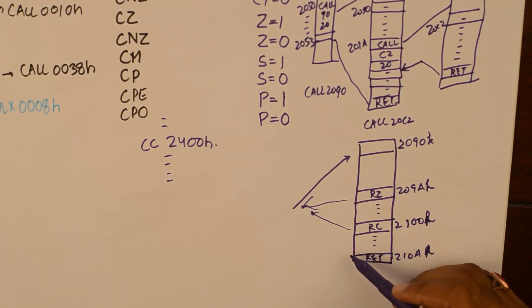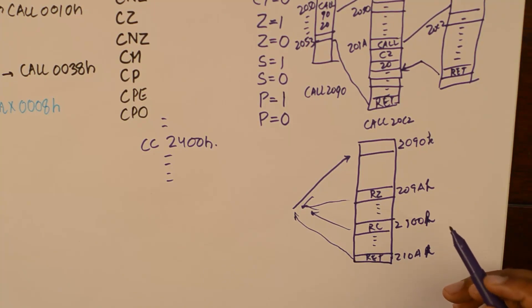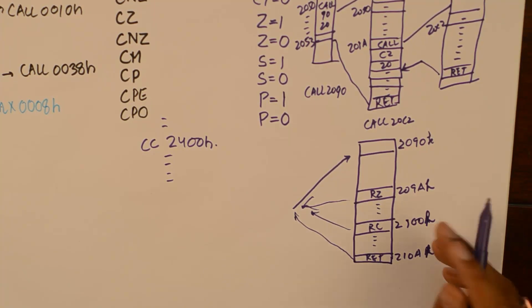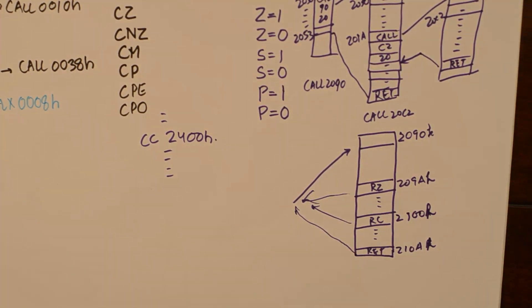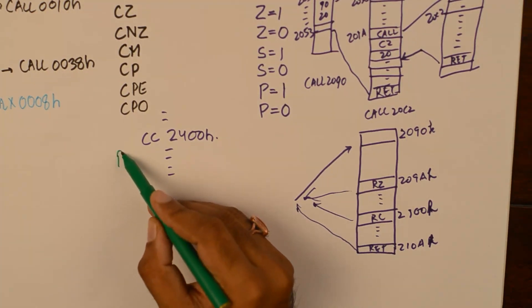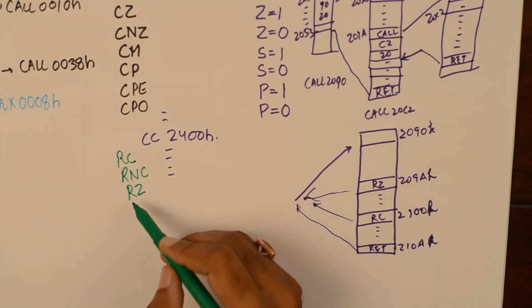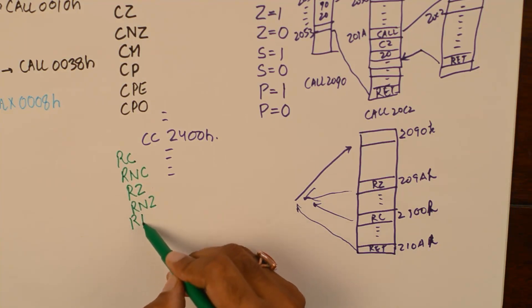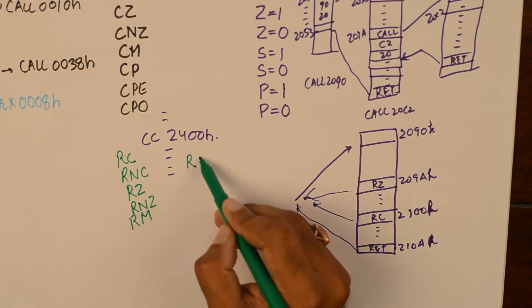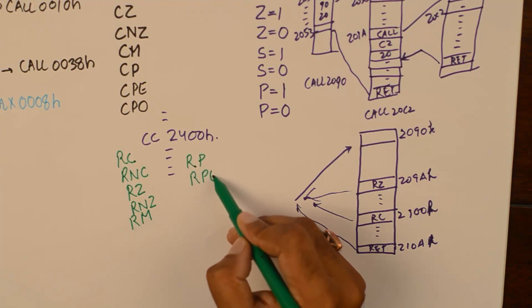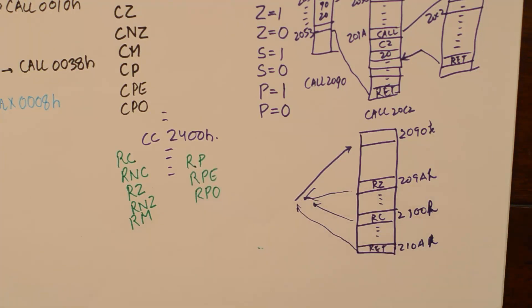At the unconditional return it will surely go back to the main program no matter what. Multiple ending subroutines are made possible by conditional returns. The conditional returns possible in 8085 are: return if carry, return if not carry, return if zero, return if not zero, return if sign flag is set, return if sign flag is not set, return if parity is even, and return if parity is odd. So for every conditional call there is a corresponding conditional return.